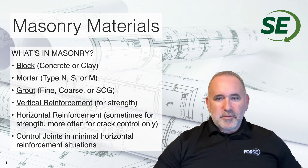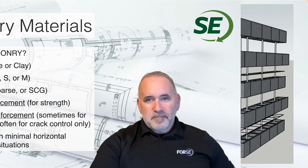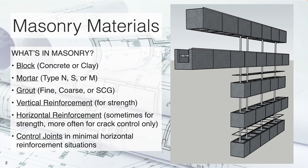In this presentation we are going to look at the strength of concrete masonry. What's in a masonry wall? We generally have block that's going to be concrete or clay. We're going to have mortar that's going to be type N, S, or M. We're going to have grout — fine, coarse, or self-consolidated grout.